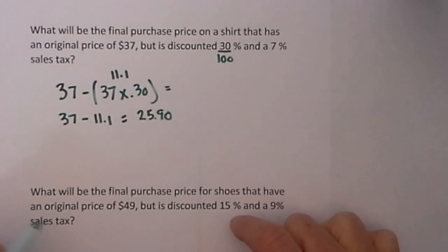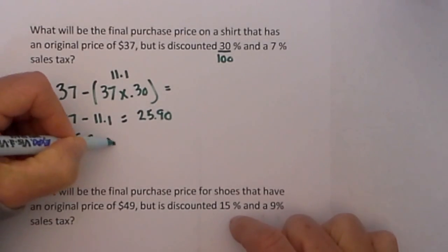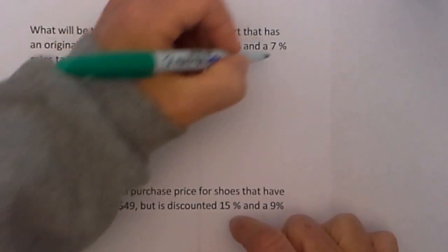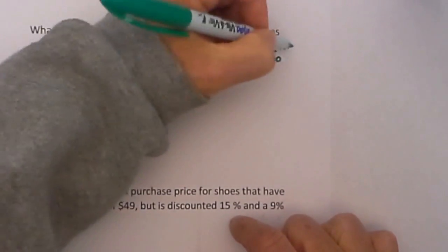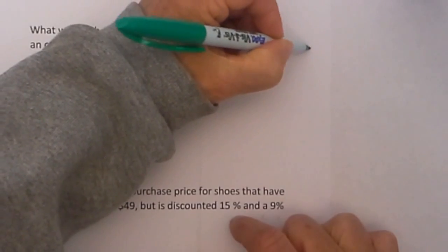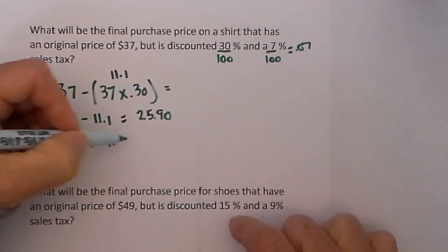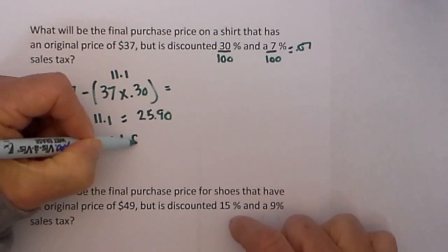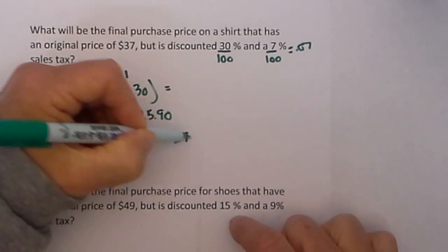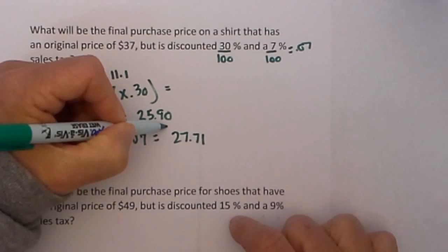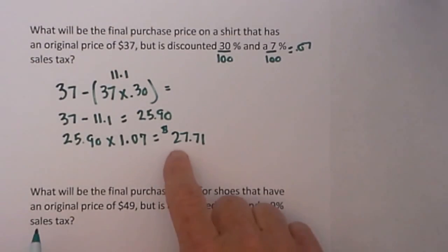I then use the formula. I take 25.90 times the sales tax and I'm going to convert that to a decimal. 7 divided by 100 equals 0.07 times 1.07 and that gives me a final price when I go to pay for it and put it on my debit card of $27.71.